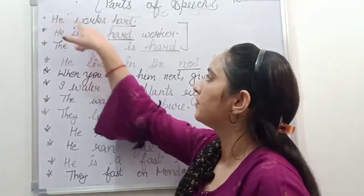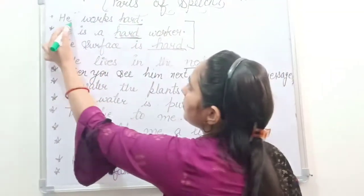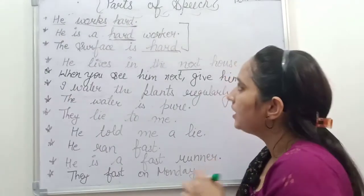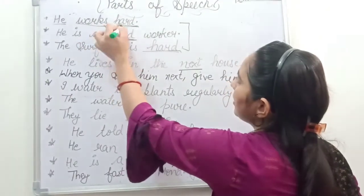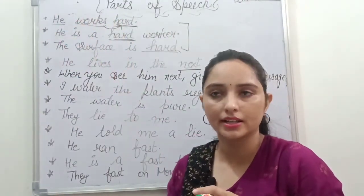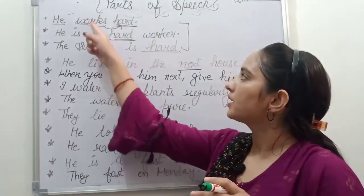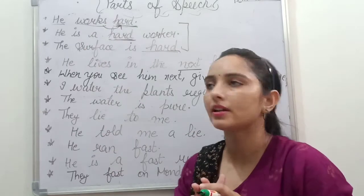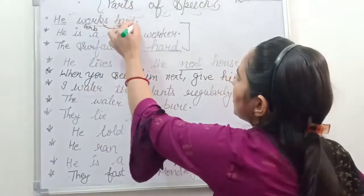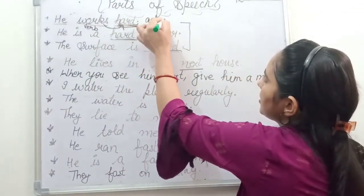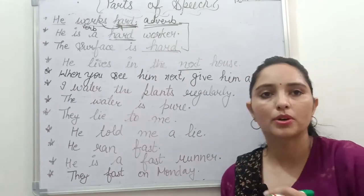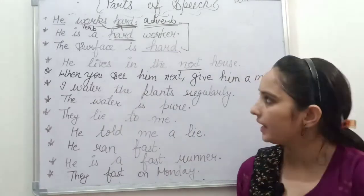First example: 'He works hard.' What is the subject? 'He' is the subject. What is the main word? The main word here is 'hard.' Now, 'he' is not doing 'hard' — rather, 'hard' is defining and modifying the verb. So the word being modified is the verb 'works.' What is 'hard' here? It is an adverb — adverbs are modifying words that modify a verb, adverb, or adjective.